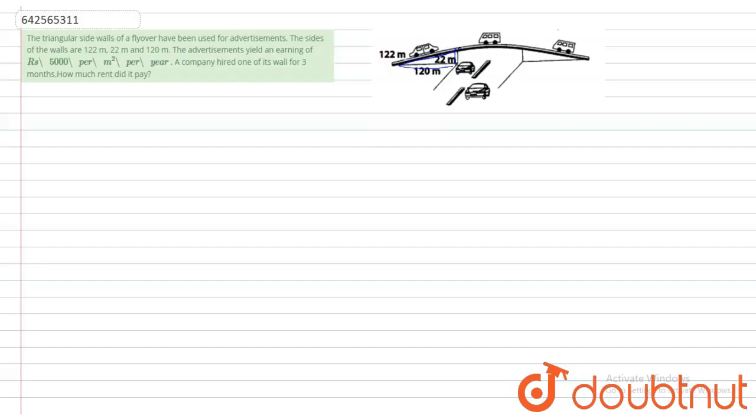All right, so first we have to find out the semi-perimeter of this triangle. So semi-perimeter of this triangle is equals to 122 plus 22 plus 120 divided by 2.